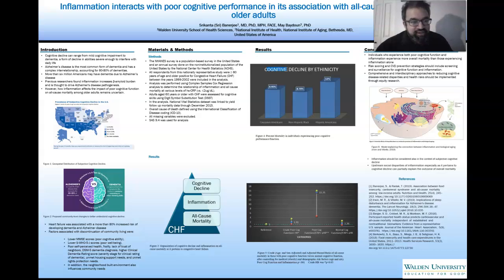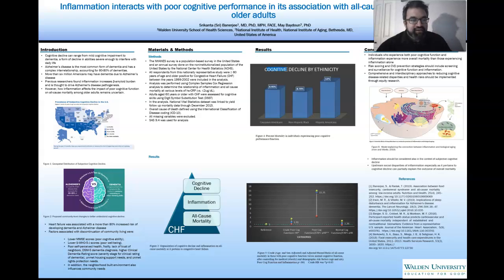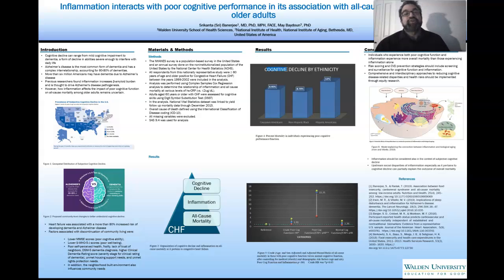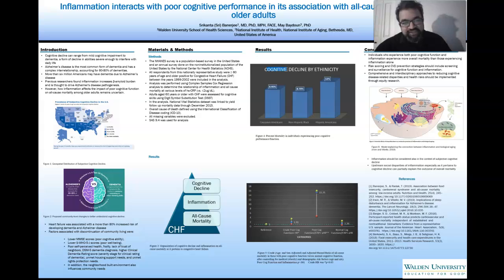It was interesting to look at heart failure from that perspective and see that when there were comorbidities like heart failure, there was an 80% increased risk of developing dementia. A lot of common inflammatory biomarkers are involved when trying to understand some of these relationships. This was more evidence that we needed to look to inflammation to try to explain the connection between cognitive function and mortality.